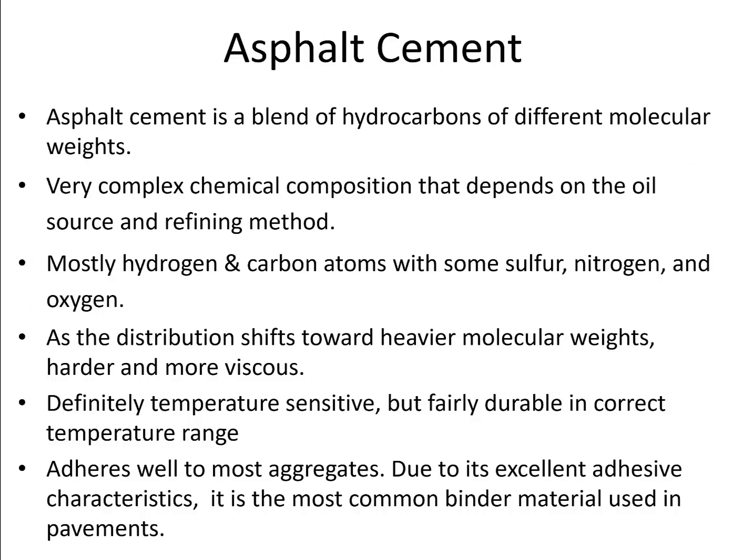Now let's talk about some details about asphalt cement, asphalt cutback, and asphalt emulsions. Asphalt cement is a blend of hydrocarbons of different molecular weights. The characteristics of the asphalt depend on the chemical composition and the distribution of molecular weights. The chemical composition is very complex and depends on the oil source and the refining method. Mostly, they have hydrogen atoms and carbon atoms, and they also have some sulfur, nitrogen, and oxygen atoms.